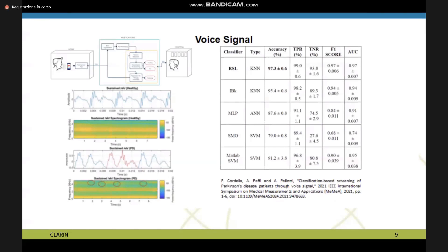In this case, we obtained with this model — using KNN — an accuracy of 97%, which is very high for our mission to distinguish a healthy from an unhealthy subject using a software machine.